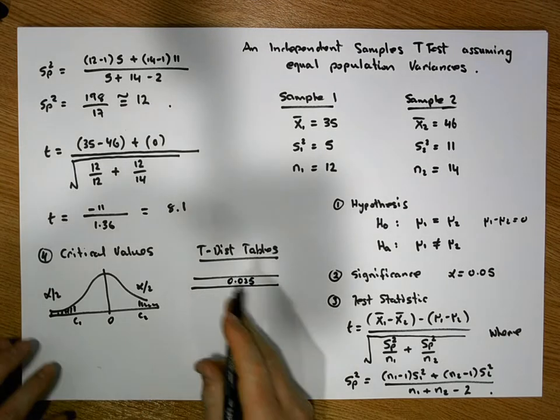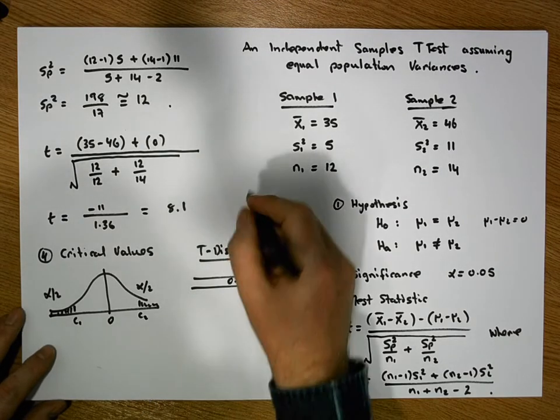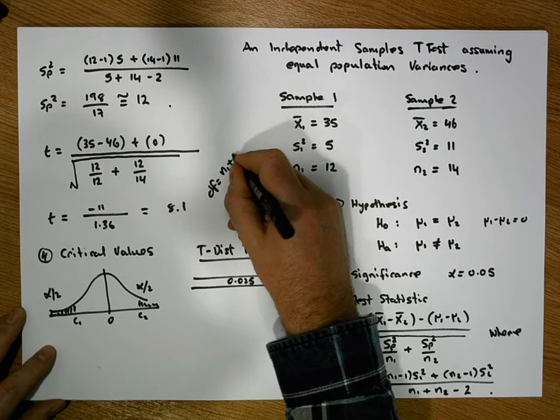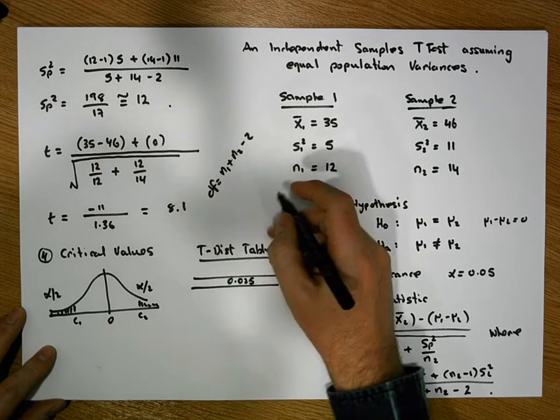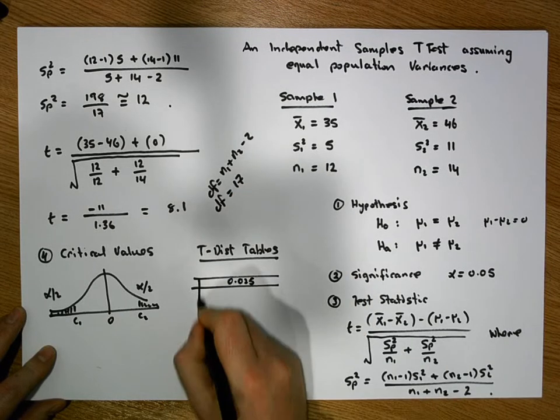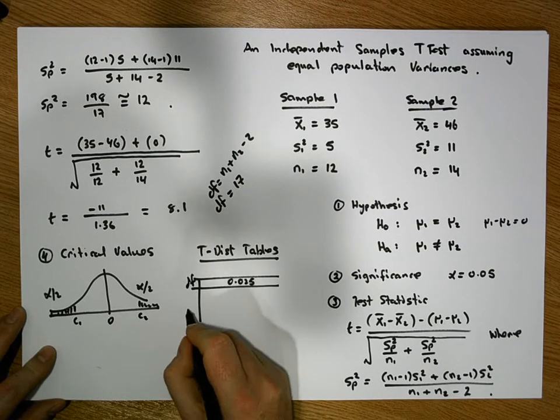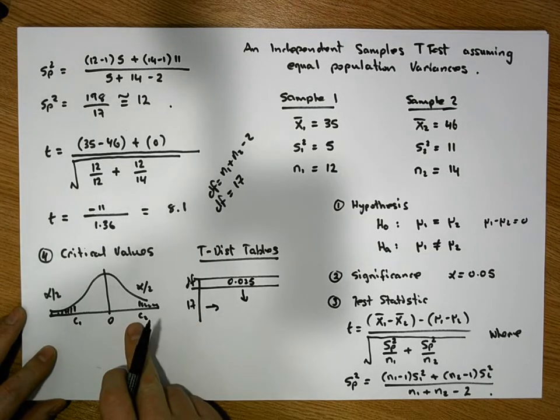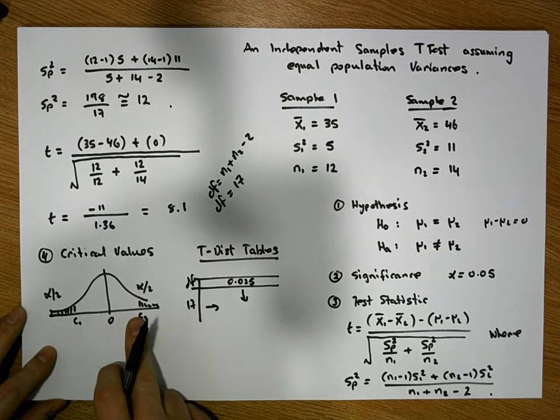And our degrees of freedom, well, the degrees of freedom are defined to be degrees of freedom is equal to n1 plus n2 minus 2. And I suppose our degrees of freedom is equal to 17. So what we're going to do is we're going to come down our degrees of freedom column to 17, triangulate in. And this will be the critical value that has 0.025 of the area to its right-hand side.